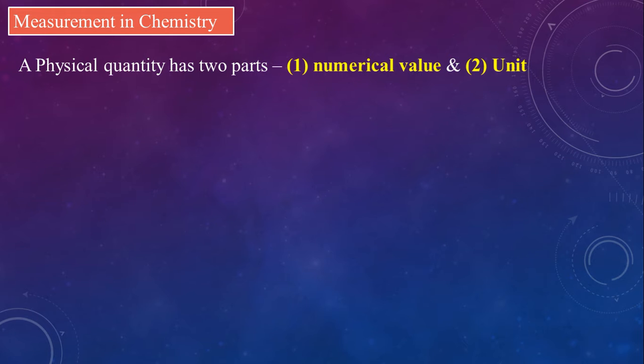For example, when I say pencil length is 10, what is the unit of it? Is it meter, cm, km? We do not know. That is why whenever we write measurements in chemistry, it must have a number as well as a unit associated with it.